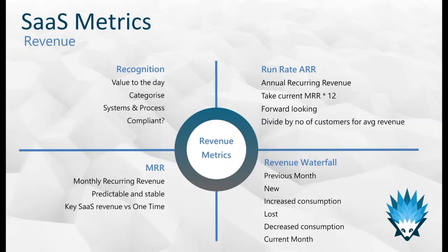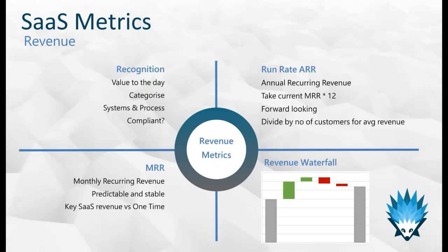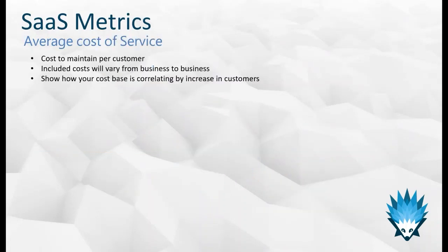And finally, the revenue waterfall — a key part of any SaaS business's board pack. We look at the previous month (or previous year) and then work out what's new: new business wins and new logo wins. Then what's increased — more users, more data transfer, however you're billing. Then detractions: lost customers and decreased consumption. That should add up to exactly where you are in the current month, and you get a waterfall chart that instantly shows the movements in your revenue, demonstrating a full understanding of how your revenue has moved month on month.